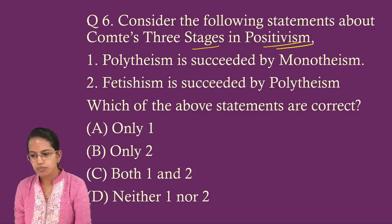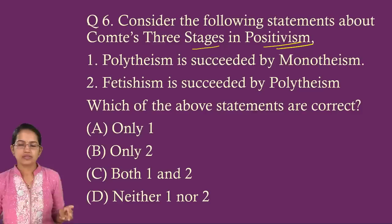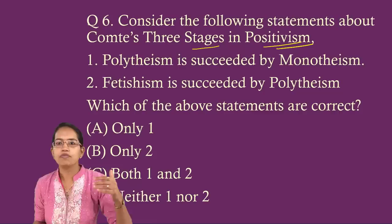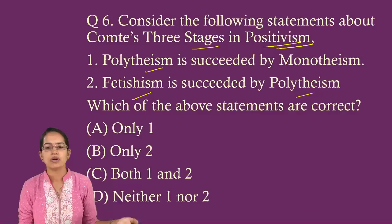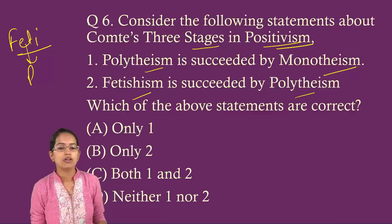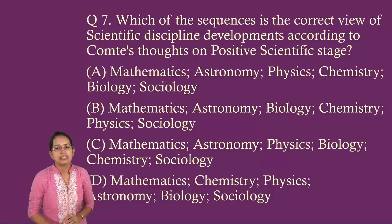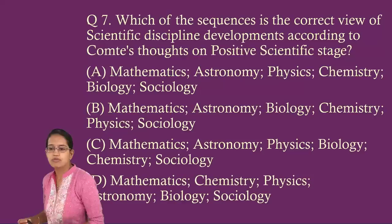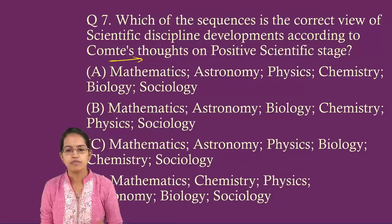Question 6: The three stages of positivism have been classified as the theological stage, the metaphysical stage, and the positive stage. The theological stage is further sub-classified into three: fetishism — where animate objects like stones and trees were worshipped — succeeded by polytheism with many gods, and later monotheism with worship of just one god. That's the flow. Question 7 asks about the sequence of scientific developments according to Comte's thought on the positive scientific stage — from most to least positive.